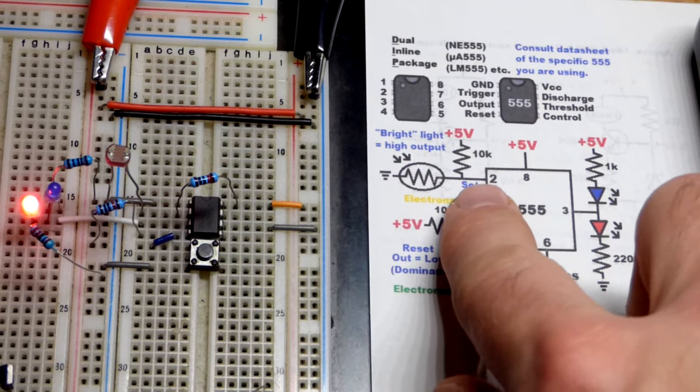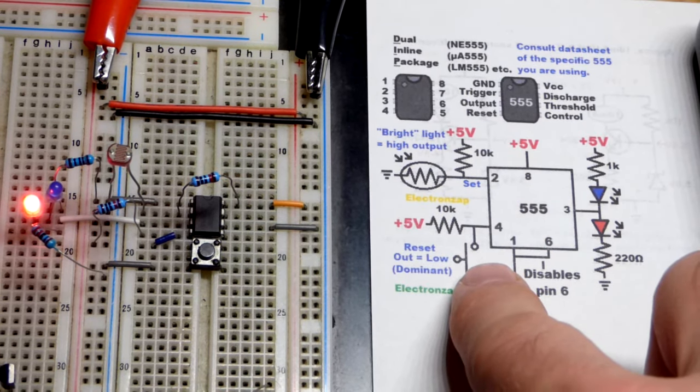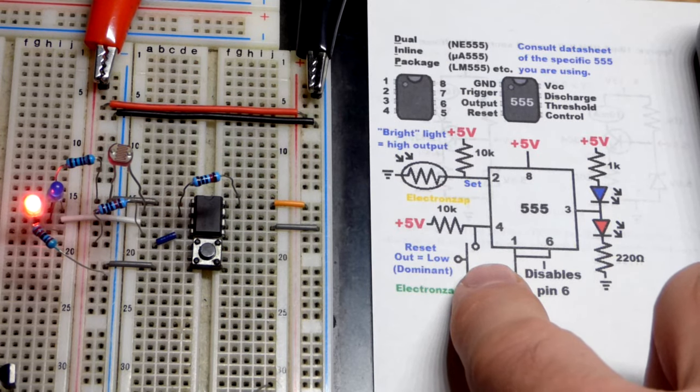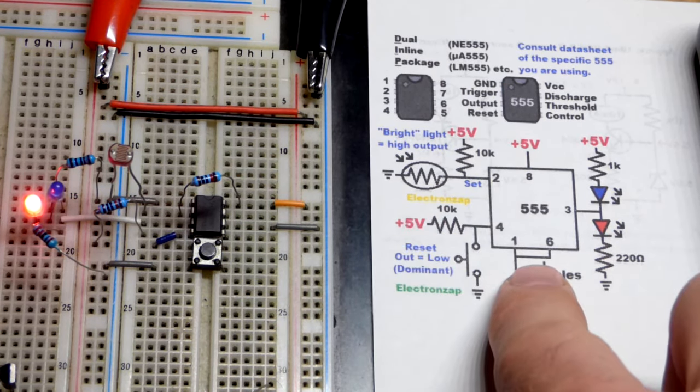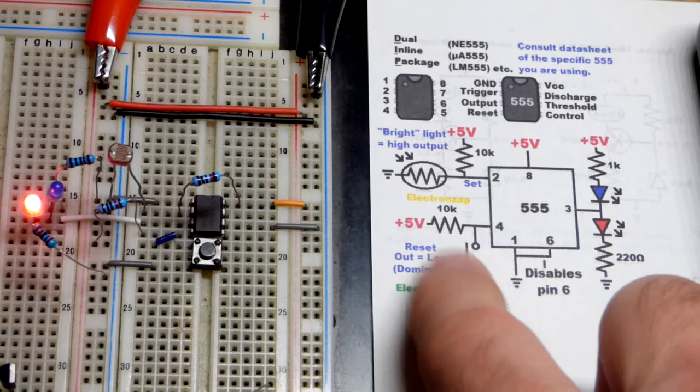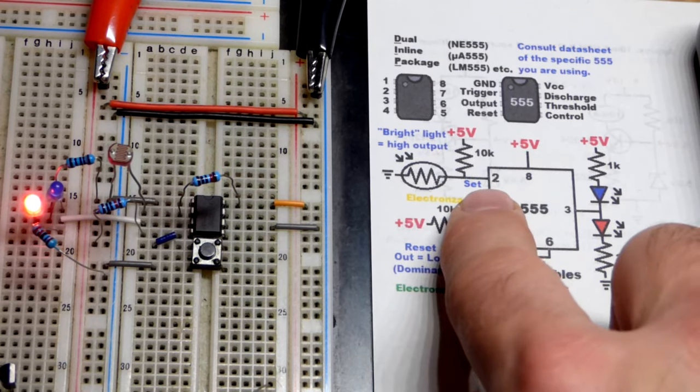Pin 2 can set the output high. Pin 4 then can set the output low, which is a flip-flop. You could also use pins 2 and 6, but pin 4 is the dominant. Now pin 2, I believe, this is an NE555.